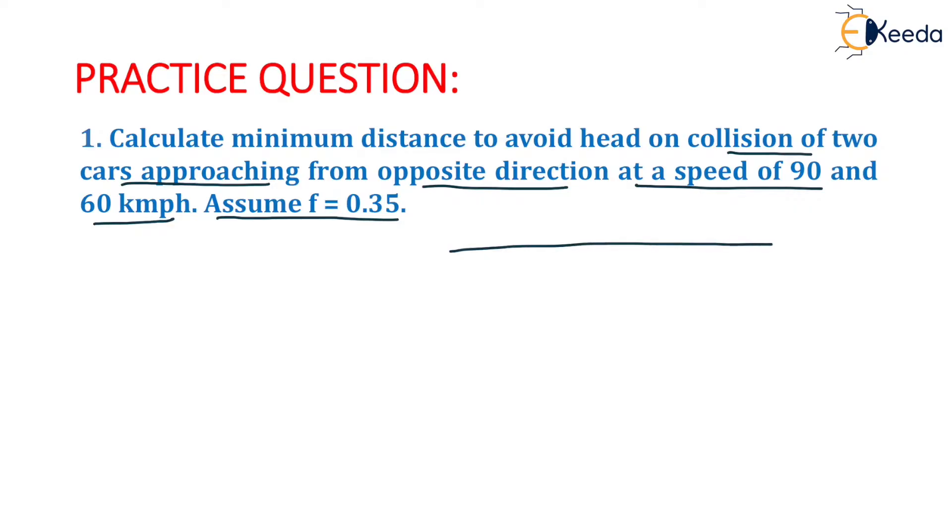This means that two vehicles are moving like this: one vehicle is moving from this direction and another vehicle is moving from this direction. So they will stop somewhat here, and the total distance will be equal to SSD1 plus SSD2.